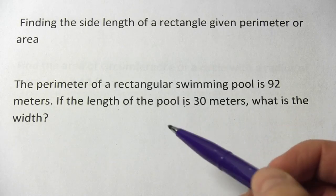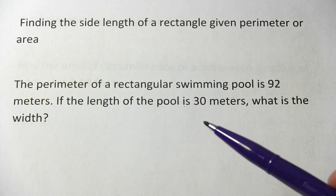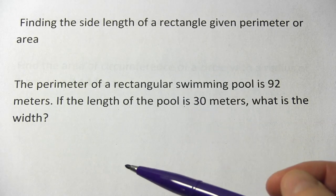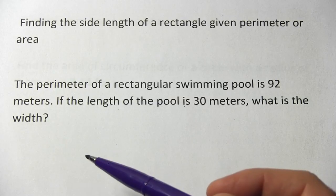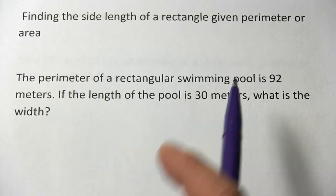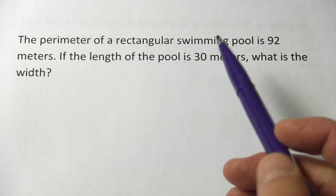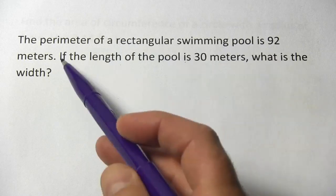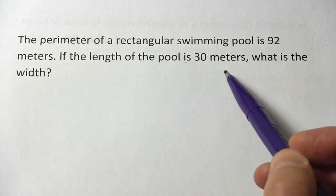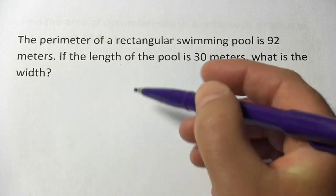Here we need to find the side length of a rectangle when you have either its perimeter or its area. Let's take a look at this first one. It says the perimeter of a rectangular swimming pool is 92 meters. If the length of the pool is 30 meters, what's the width?